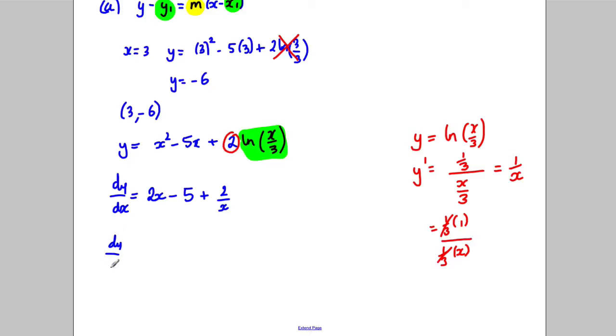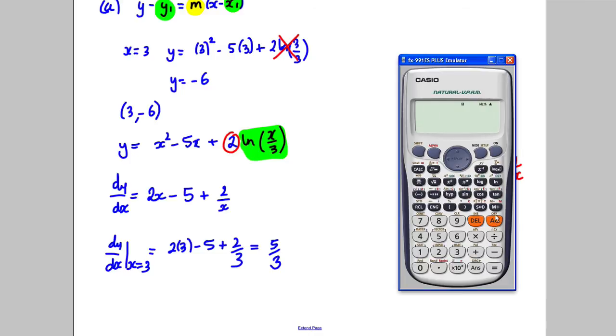So that's our dy by dx, and we want our dy by dx at the x equals 3 value. So this would be when we're substituting 3, so 2 multiplied by 3, take away 5, plus 2 over 3, and that would be equal to 1 and 2 thirds, which would be 5 over 3.